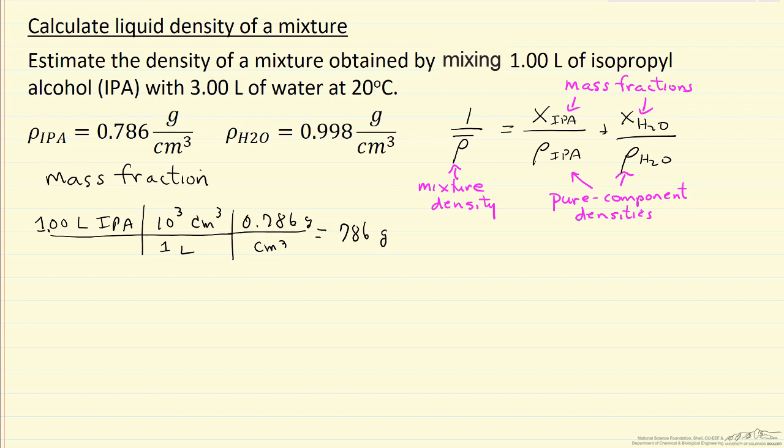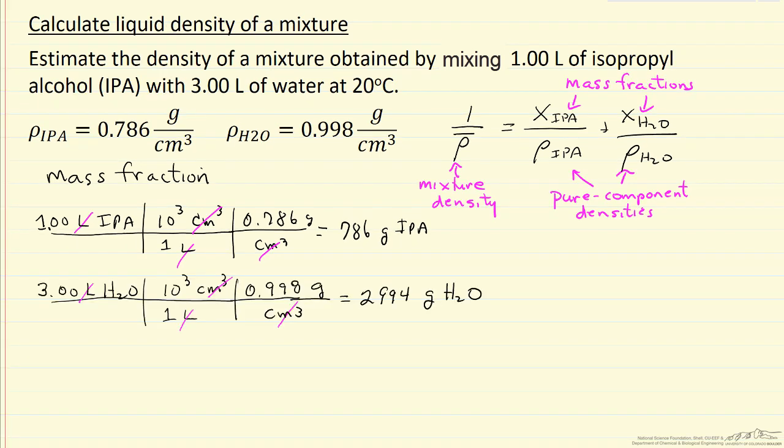786 grams isopropyl alcohol in a liter. And note, just to check, the units are consistent. So now I'm going to do the same thing for water. I'll pause and do that since it's the same type calculation. We have three liters of water so we have a lot more mass of water.